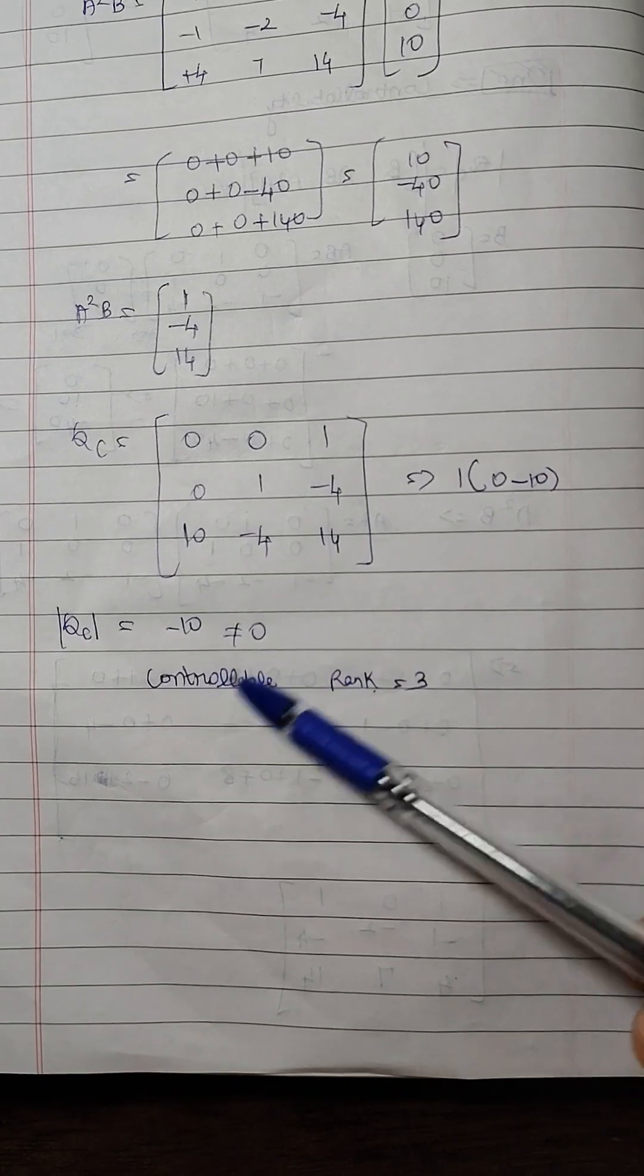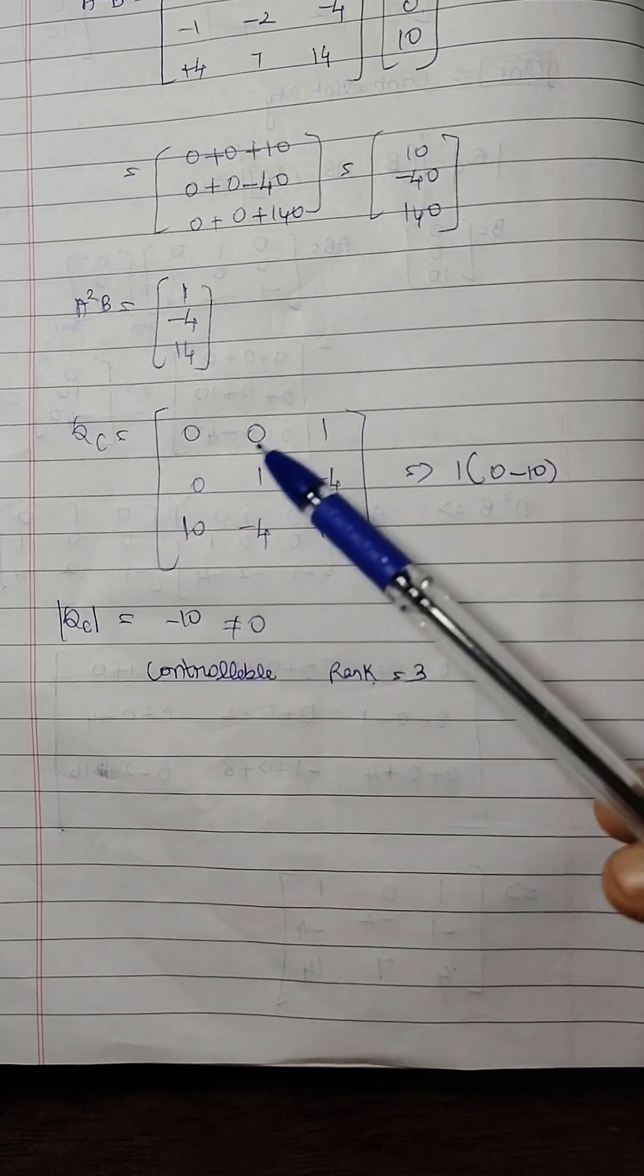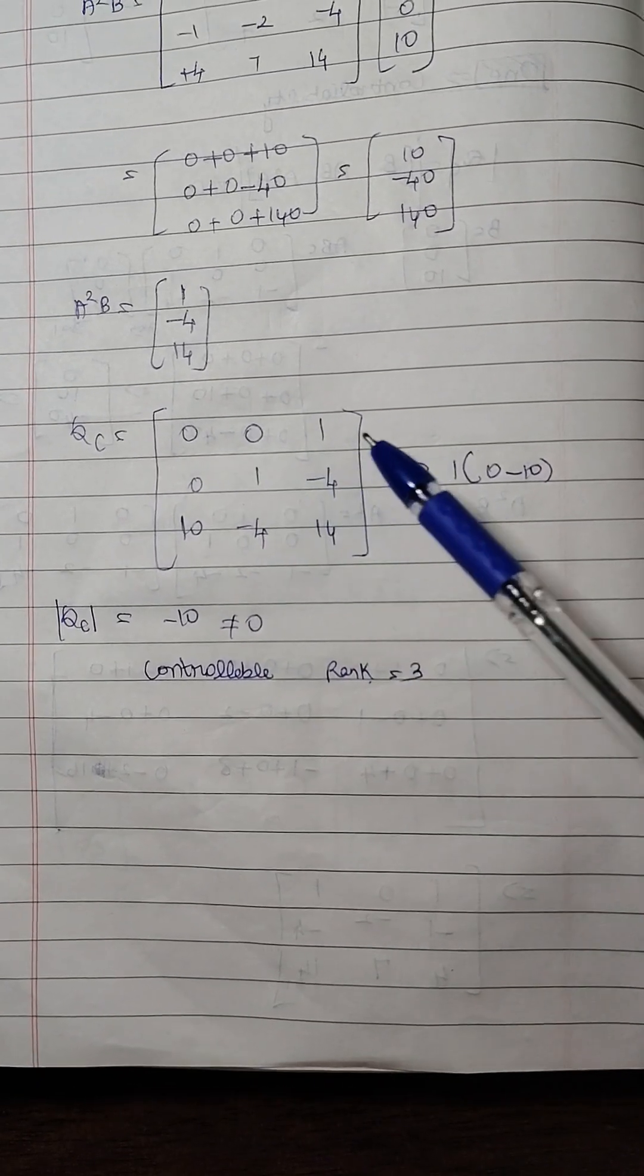Modulus of Q of C is minus 10 and it is not equal to 0. The system is completely controllable. Regarding the rank, all the 3 rows and columns are independent, so the rank is 3.